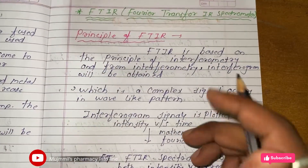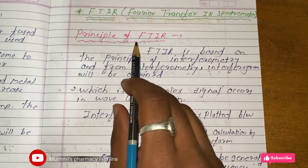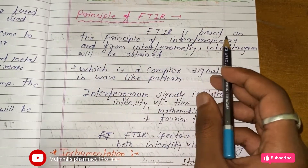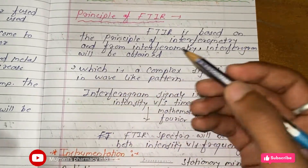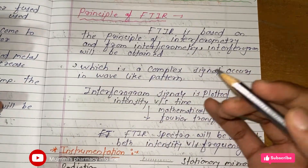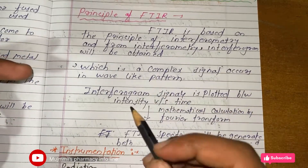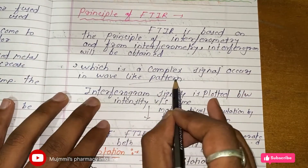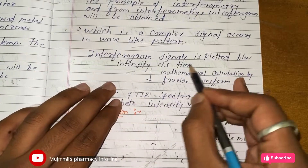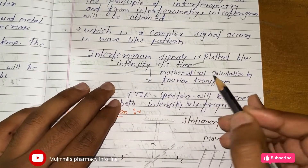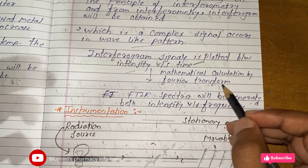Let's see FTIR — Fourier Transform IR spectroscopy. The principle of FTIR is based on interferometry. From interferometry, an interferogram is obtained, which is a complex signal occurring in a wave-like pattern. This interferogram signal is then plotted as intensity versus time, and mathematical calculations are performed using Fourier transform. FTIR spectra are generated as intensity versus frequency.